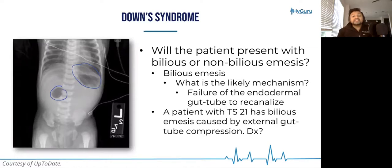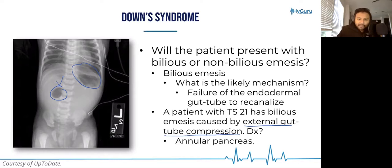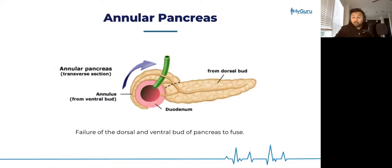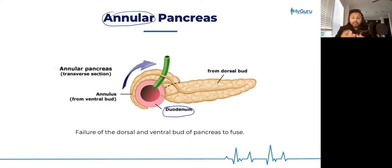A patient with trisomy 21 has bilious emesis, maybe the same abdominal film, but now you note external gut tube compression. Similar presentation to duodenal atresia, but with external compression — if you're thinking annular pancreas, you're absolutely correct. In annular pancreas, the ventral and dorsal bud of the pancreas do not migrate and fuse properly; they form an annulus — a ring surrounding the duodenum — giving a similar presentation. Annular pancreas is associated with Down syndrome and is an external compression of the duodenum due to failure of the dorsal and ventral pancreatic buds to fuse.